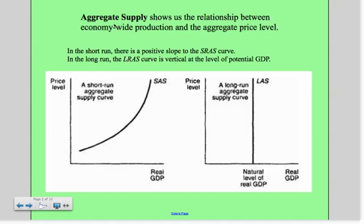Let's start with the definition of aggregate supply. Aggregate supply shows the relationship between economy-wide production and the aggregate price level, in a fashion similar to the aggregate demand curve. In the short run, there is a positive slope to the short run aggregate supply curve.